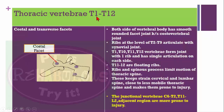From T1 to T12, thoracic vertebra have costal and transverse facets. Ribs at the level of T2 to T9 articulate with synovial joints. T1, T10, T11, and T12 form a joint with first rib and have a single articulation on each side. T11 and T12 are floating ribs. Ribs and spinous process limit thoracic motion, making junctional vertebra like C6–T2, and T11–L2 more prone to injury.